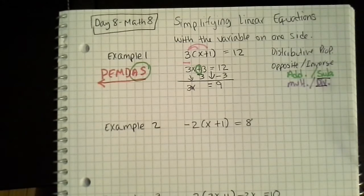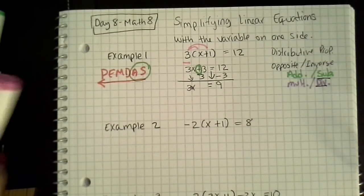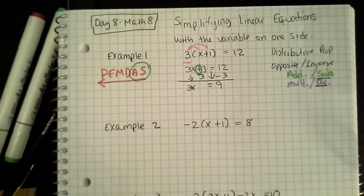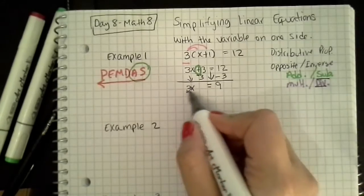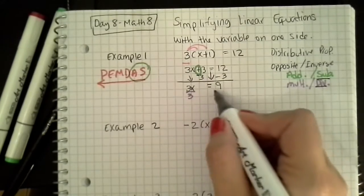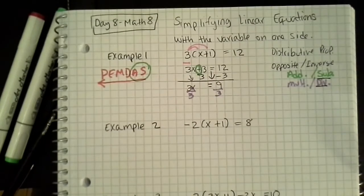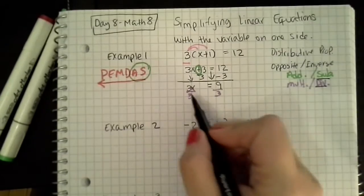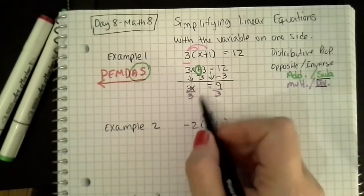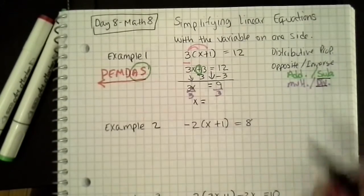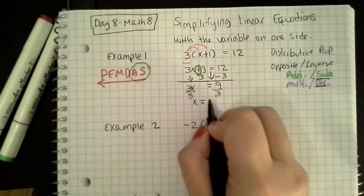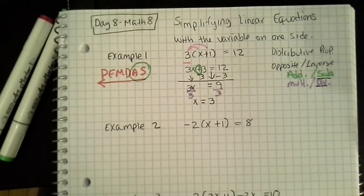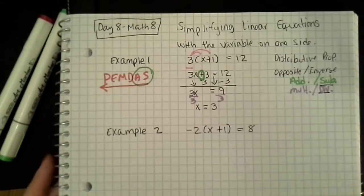I divide both sides by 3, which 3 divided by 3 is 1, so that gives me x equals, and then 9 divided by 3, that is a 3. I have nothing more to do with this problem, so that is my answer.